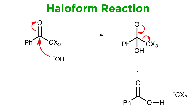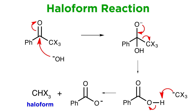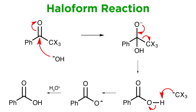This anion, though stabilized, is still rather basic, so it will take the carboxyl proton from the newly formed carboxylic acid, and we are left with a carboxylate anion and something called a haloform, which is the name given to a molecule of methane where three hydrogens are replaced by halogens. Aqueous acidic workup will protonate the carboxylate to get the carboxylic acid we wanted, and the transformation is complete. We have successfully converted a methyl ketone into a carboxylic acid.